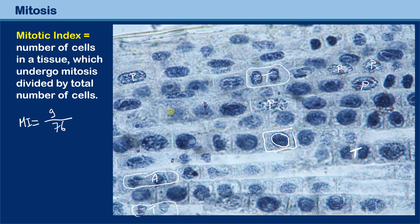I recommend that if you have a permanent slide in your school lab with onion roots, count a few hundred cells in rows, and tell your partner: interphase, interphase, interphase, prophase, interphase... and so on. That way you can determine how many cells are currently dividing.